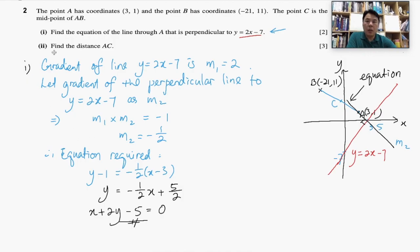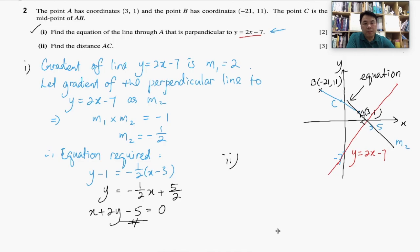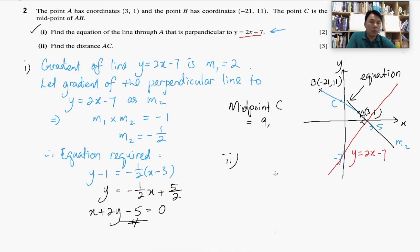We have successfully answered that question. Now for the second section — find the distance AC. To find AC, we first need the midpoint C. The midpoint C between A(3,1) and B(-21,11) has coordinates: x = (3 + (-21))/2 = -9, y = (1 + 11)/2 = 6. So C = (-9, 6).